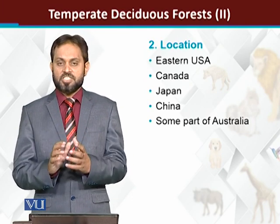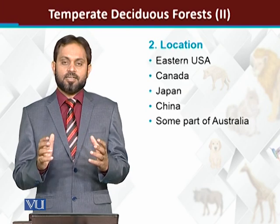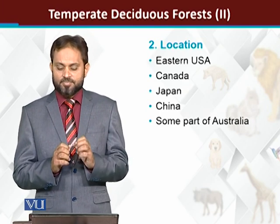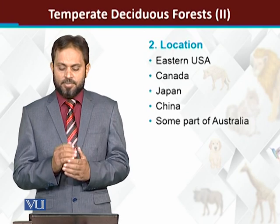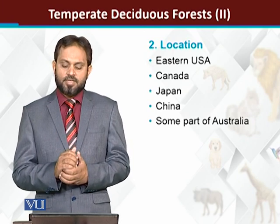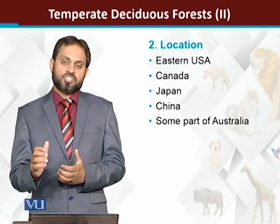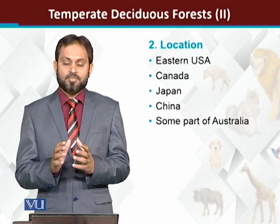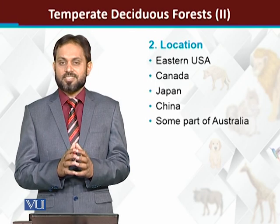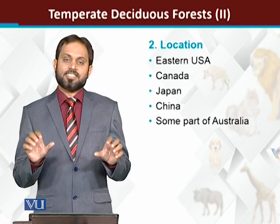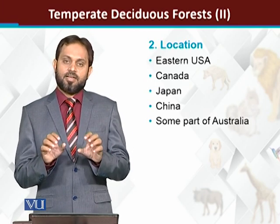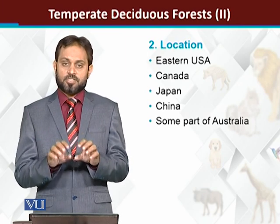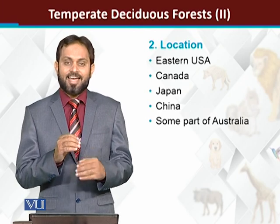So where are the Temperate Deciduous Forests present in the world? Normally, the eastern USA, Canada, Japan, China, and some part of Australia have Temperate Deciduous Forests. Previously these forests existed in more areas, but in the current scenario, many Temperate Deciduous Forests have been removed for agriculture.